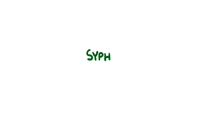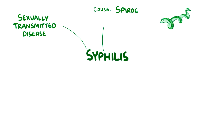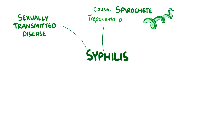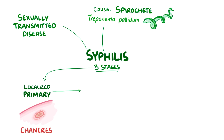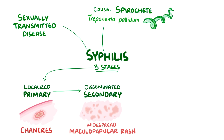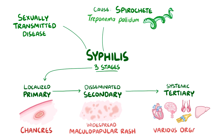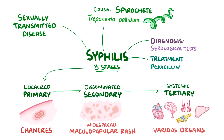As a quick recap: syphilis is a sexually transmitted disease caused by the spirochete Treponema pallidum. It can cause disease in three stages. The first is localized primary syphilis, which produces hard chancres. The second is disseminated secondary syphilis, which produces widespread maculopapular rash. And the third is systemic tertiary syphilis, which affects various organs. Syphilis can be diagnosed using serological tests and treated with antibiotics like penicillin.